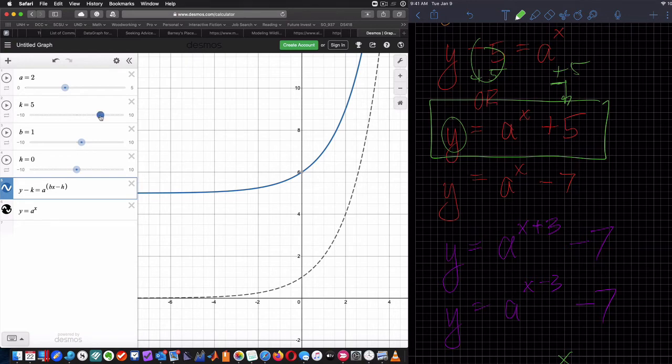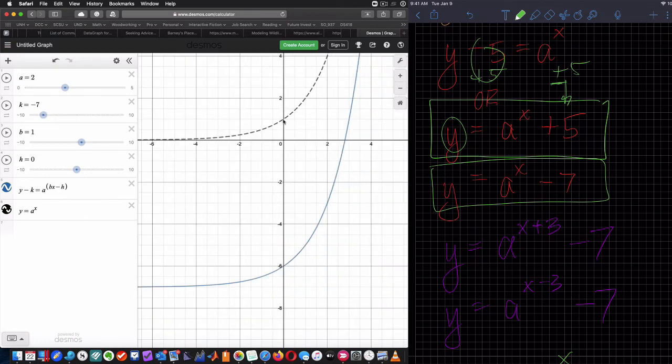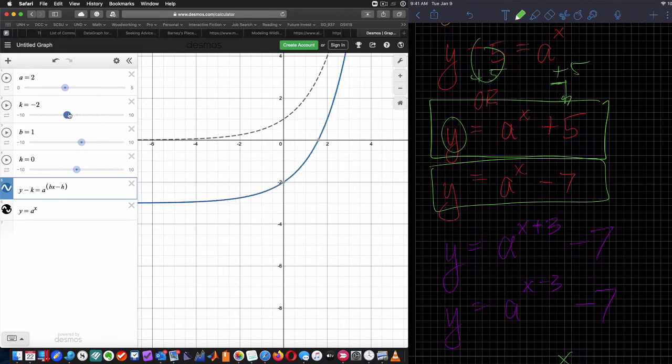Now let's change K back to zero and look at the next function. Y equals A to the X minus seven. So now my K value is actually negative seven. And so that's a downshift of seven units. Zero comma one down to zero comma negative six. Again, how many units? One, two, three, four, five, six, seven. So I'm just grabbing my curve and shifting it down seven units.